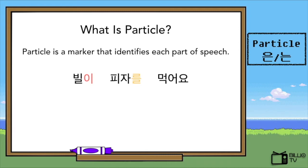The sentence is 빌리 피자를 먹어요, which means 'Billy eats pizza.' Let's figure out the structure of the sentence. We see the subject, object, and verb. Verbs are easy to identify because each verb form has its own endings, and usually they are at the end of the sentences.